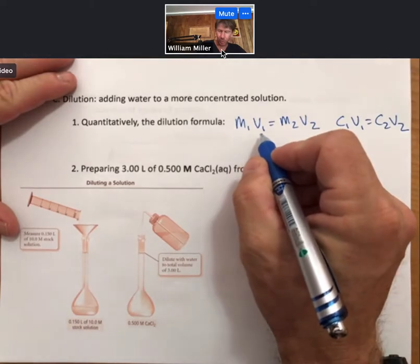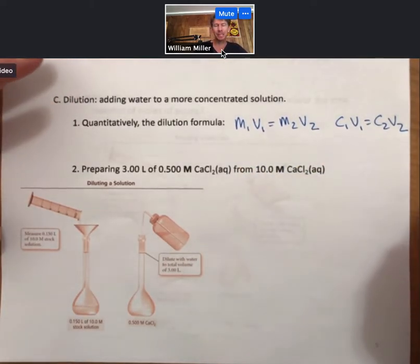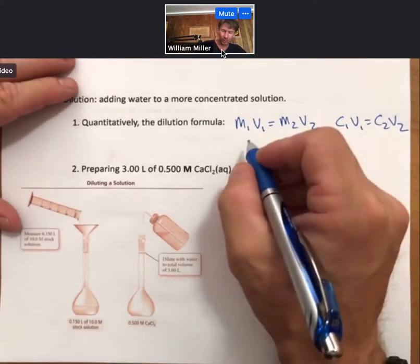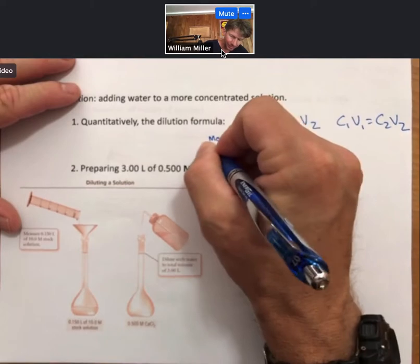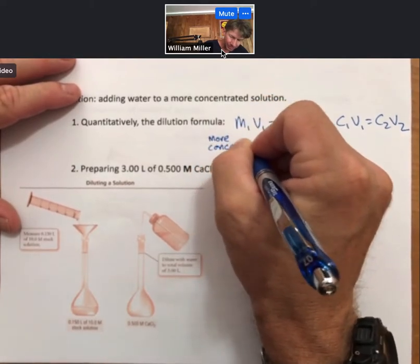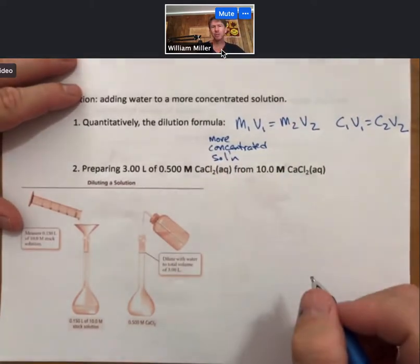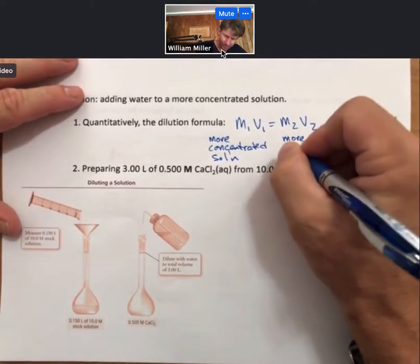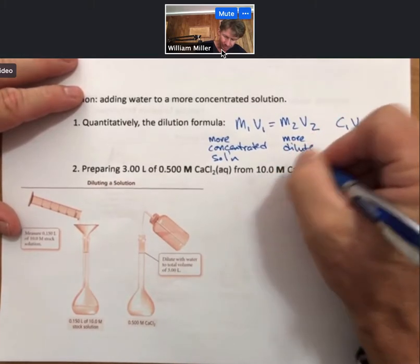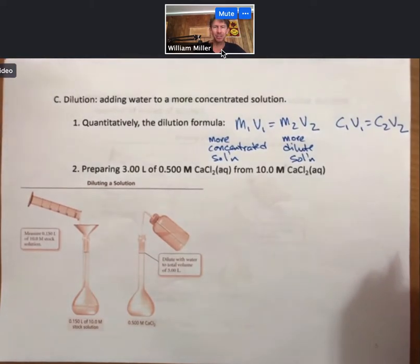For the subscripts one, the way that I like to keep things simple for me and keep track of things, is that the ones stand for the more concentrated solution, while the twos stand for the more dilute solution. Not that the math cares. You can do it either way, but that helps me keep it organized.